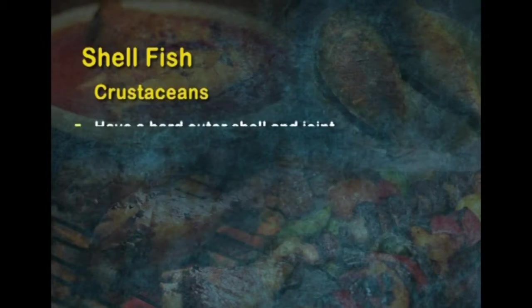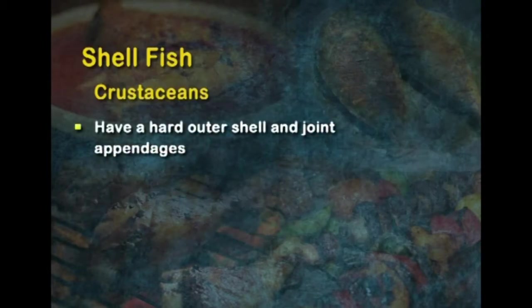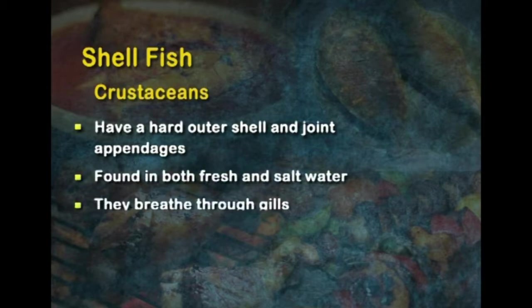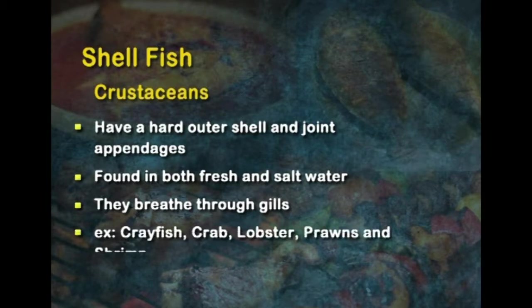Crustaceans have a hard outer shell and legs or jointed appendages. They are found in both fresh and salt water and breathe through gills. Examples include crayfish, crab, lobster, prawns and shrimp.